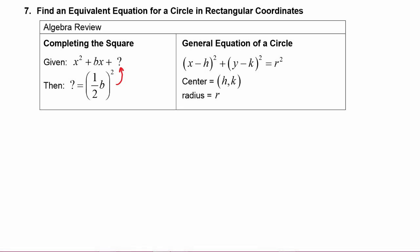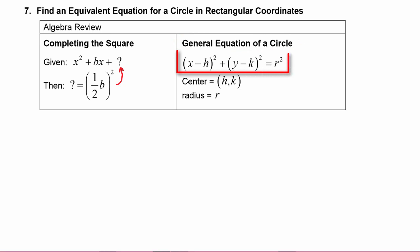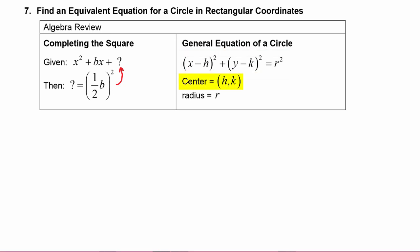A quick reminder of the general equation of a circle: it is in the form x minus h quantity squared, plus y minus k quantity squared, is equal to r squared, where the center of the circle is (h, k) and the radius of the circle is r, which is the square root of r squared.